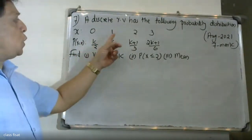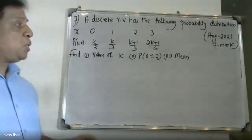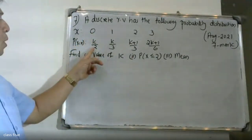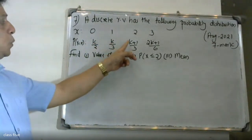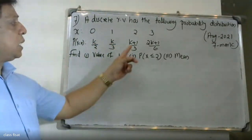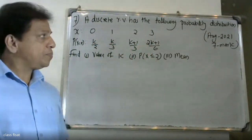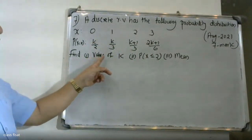x takes the values 0, 1, 2, 3. The probability of x: at x=0 it is k/2, at x=1 it is k/3, at x=2 it is (k+1)/3, and at x=3 it is (2k+1)/6.